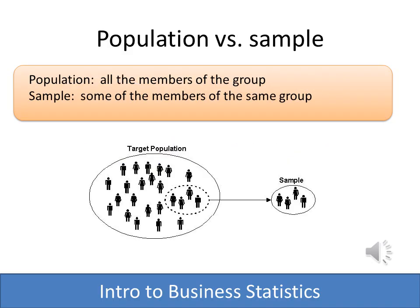Just to make sure we understand the difference: the population is all the members of the group. If my population were all the students at this college, that would be the population. The sample would be just some of the members, either taken at random, or through various sampling methods that we'll learn as we go further in this class.